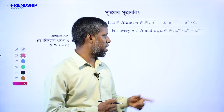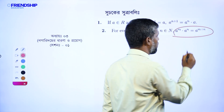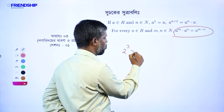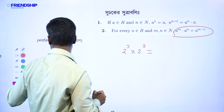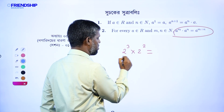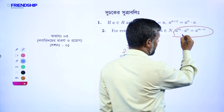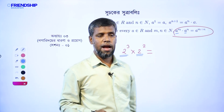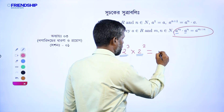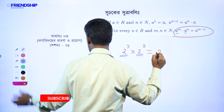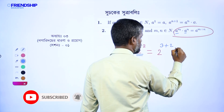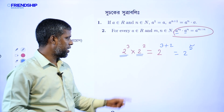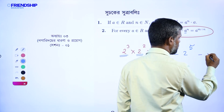So, a to the power n is equal to a to the power n. Two aircraft: a to the power n is equal to a to the power n plus n. So, 3 plus 2 — this will be 2 to the power 5. We know that 2 cube means 2 to the power 5 means 32.